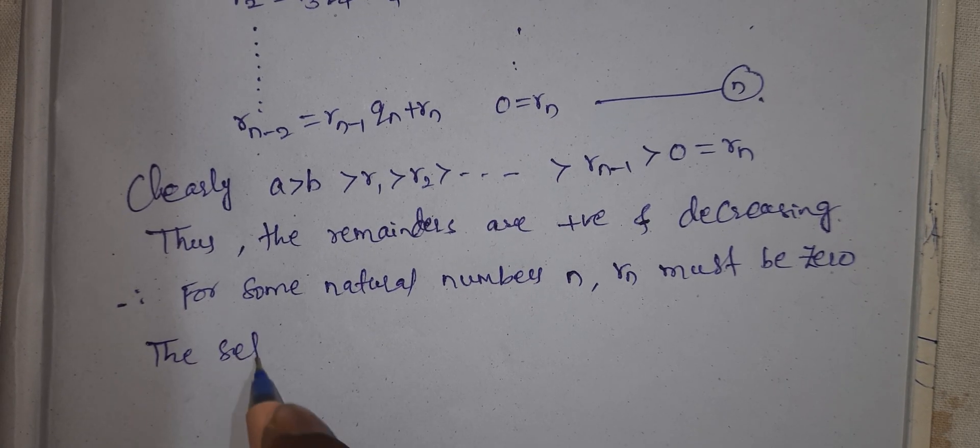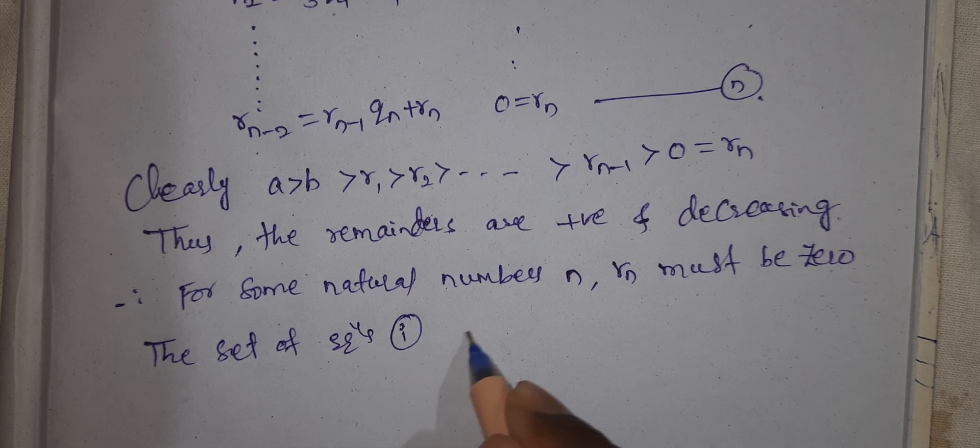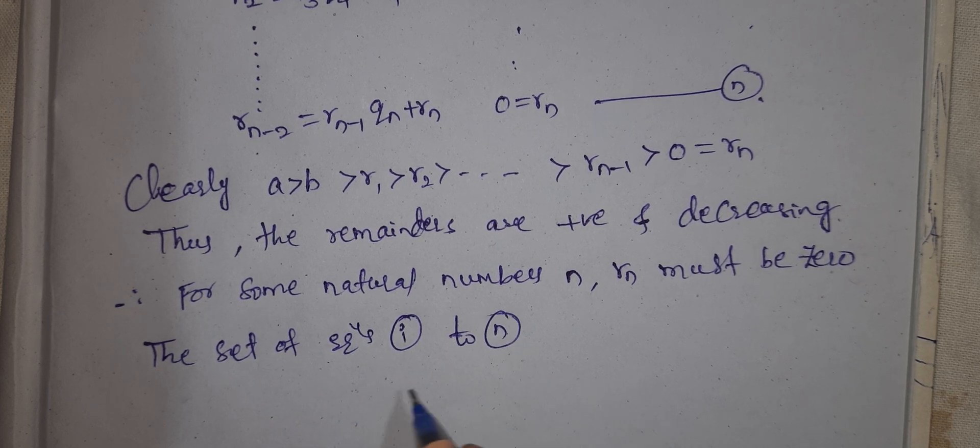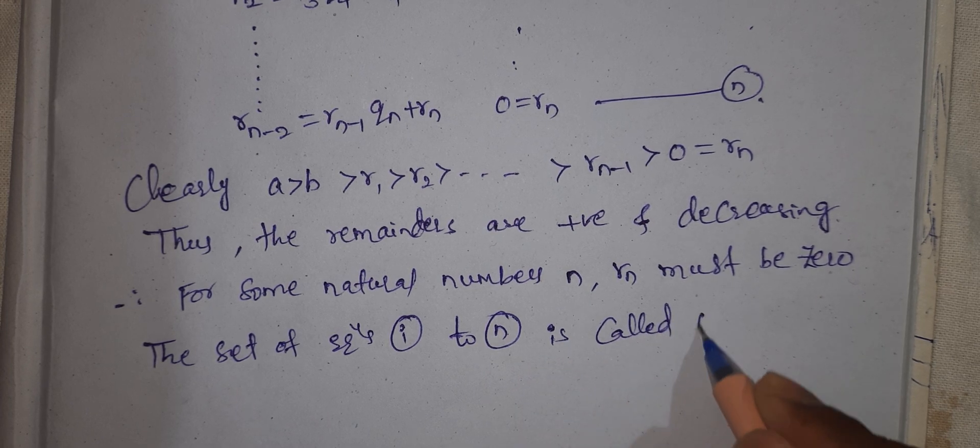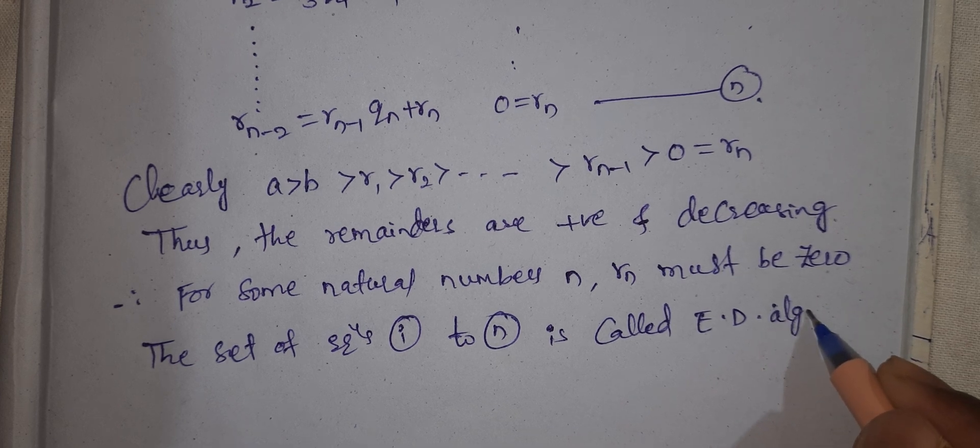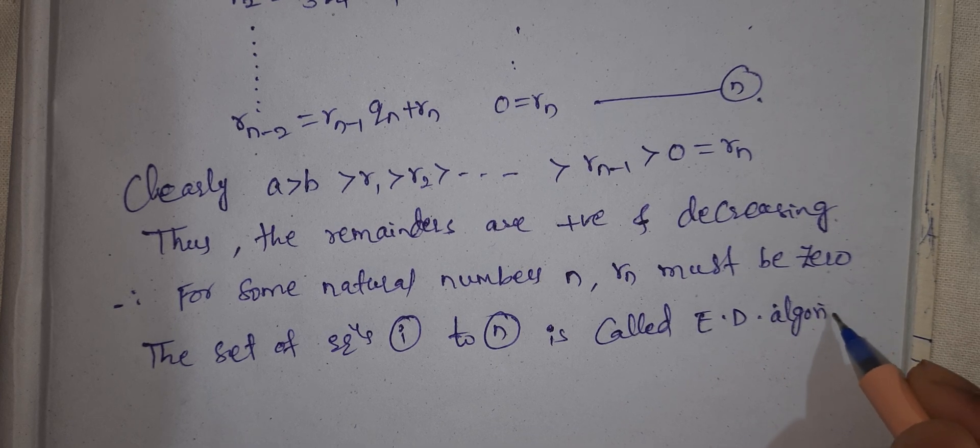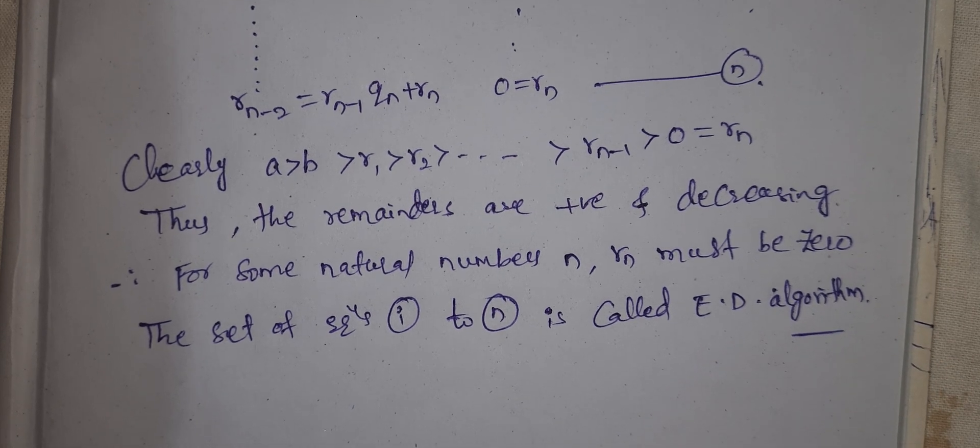So the set of equations roman number 1 to n is called Euclid division algorithm for number A and B.